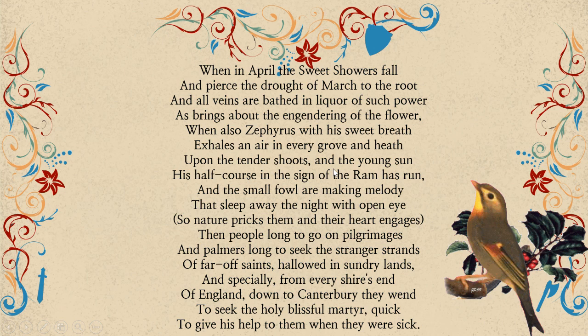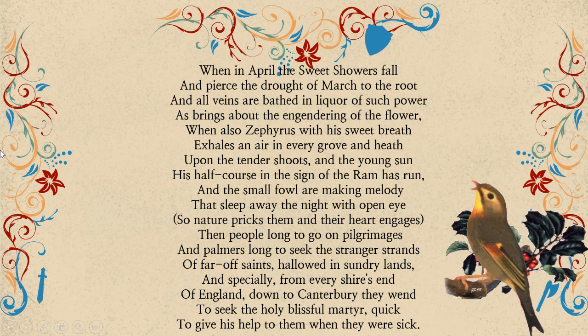"And the young sun has half course and the sign of the Ram has run." In spring the sun is in half course in the sky, meaning we are at the beginning of April, or the middle of the Ram's course. Ram is the same as the zodiac sign of Aries. "And the small fowl are making melody" — fowl is a bird, actually — "that sleep away the night with open eye, so nature pricks them and their heart engages."